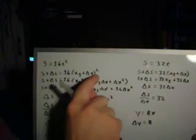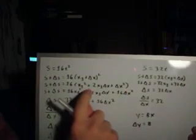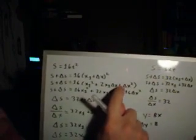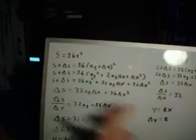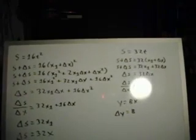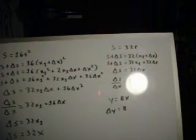Now, as we know, when we have something like this, we're going to factor it out. And this is how we factor it out here. We have X1 squared plus 2X1 delta X plus delta X squared. And we're going to take each one of these terms times the number 16. And when we do, we get S plus delta S equaling 16X1 squared plus 32X1 delta X plus 16 delta X squared.